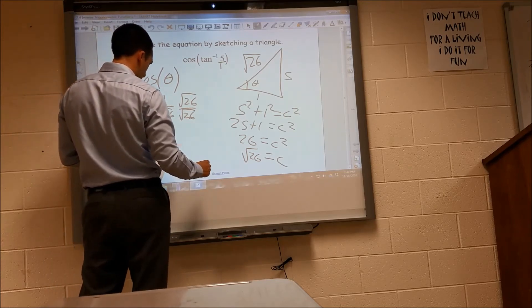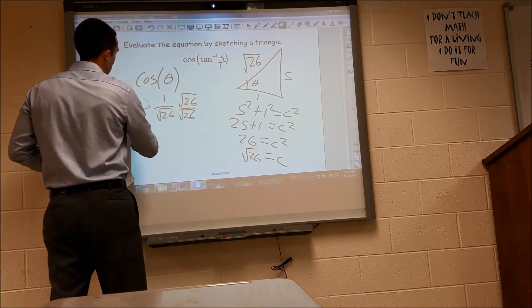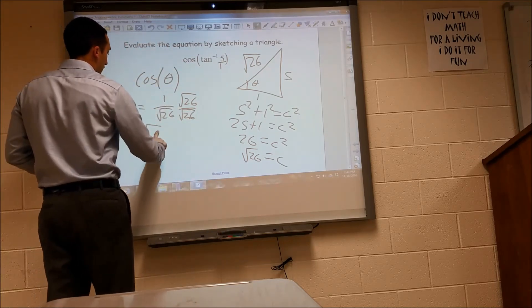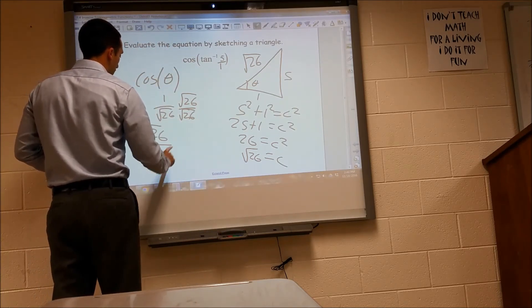So it's not cosine of that. It's cosine of theta equals this now. And that gives us radical 26 over 26.